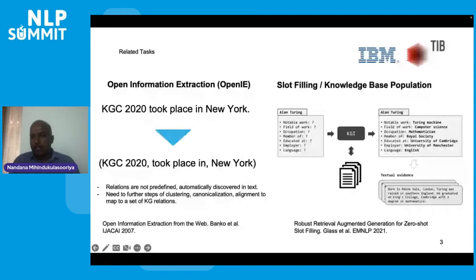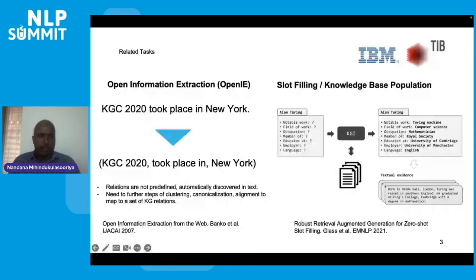Looking at examples from relation extraction benchmarks: in the TACRED benchmark, a sentence with head and tail entities is given, and the task is to identify the correct relation between them. For example, given 'Kathleen' and 'chairwoman,' the task identifies the relation as 'title.' Importantly, we must also identify cases where there is no relation between two entities — for example, between 'Baldwin' and 'executive,' where no relation holds.